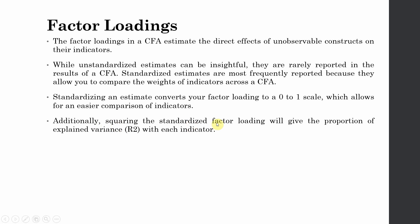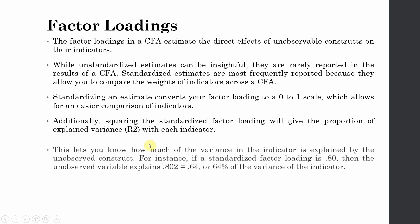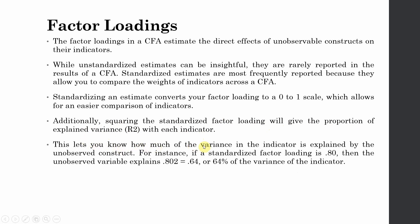Additionally, squaring the standardized factor loading will give you a proportion of explained variance with each indicator. This lets you know how much variance in the indicator is explained by the unobserved construct. For example, if the standardized factor loading is 0.80, then the unobserved variable explains 0.64 or 64% variance of the indicator.